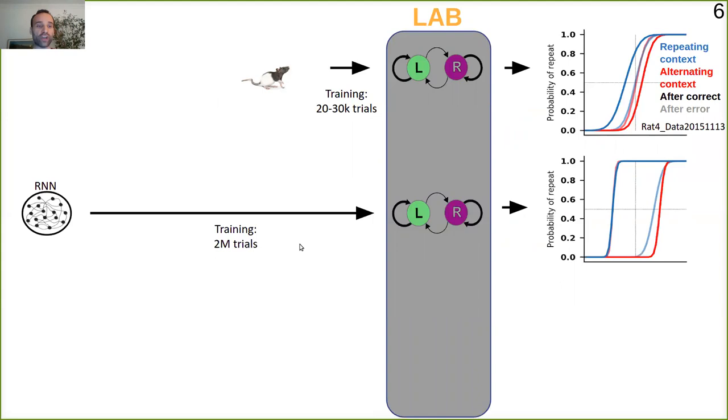So this is the scenario we have now. We are training the networks for much longer and then they find a solution that is actually better than the solution that rats have found.